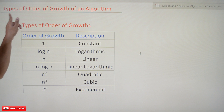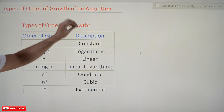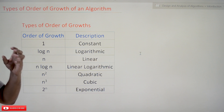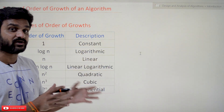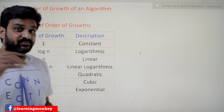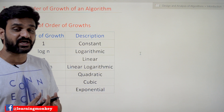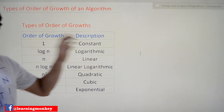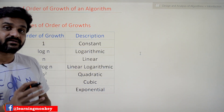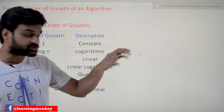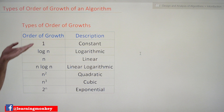So what are the types of order of growth of an algorithm? These are the different types of order of growth that we are going to come across in this entire course. For any algorithm you are given, the efficiency — from now on, order of growth and efficiency can be used interchangeably, both are the same — the efficiency of that algorithm is going to be among one of these types.